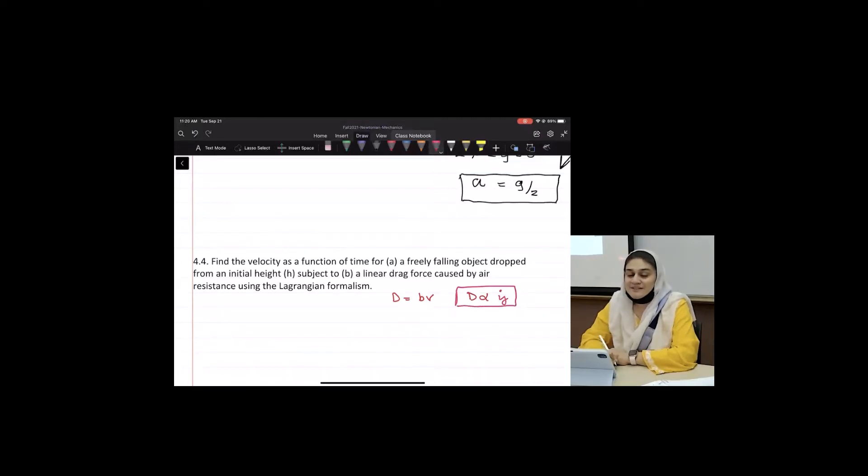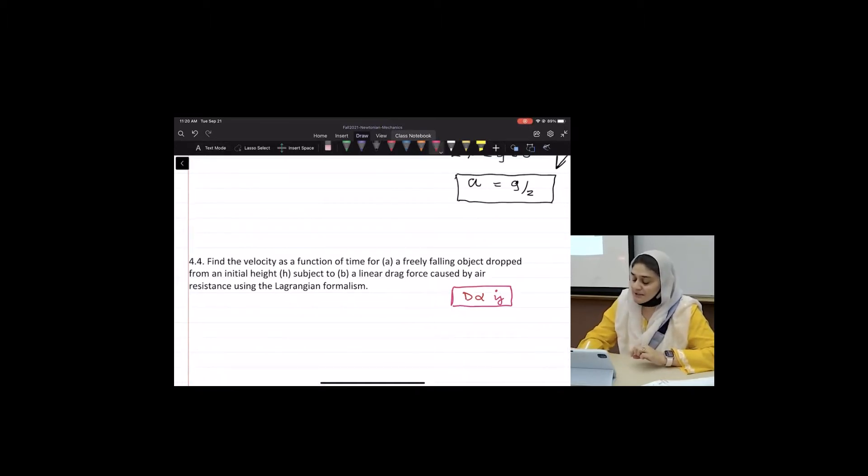How would you set this up? Consider that you are sitting on the object that's falling. So if this is your object that's falling, drag is upwards, mg is downwards, and this object is accelerating.